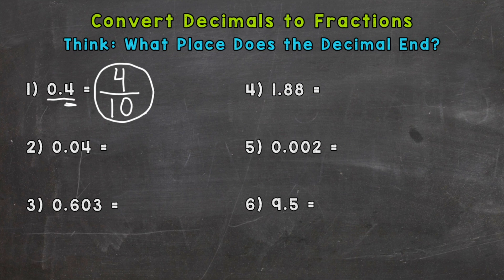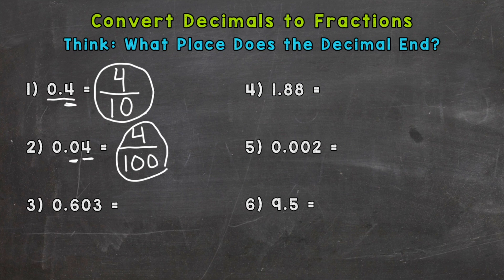Number two is similar to number one but not the same value — it's going to have a different denominator. Again, what place does that decimal end? It ends in the hundredths, because we have that placeholder zero that pushes the four to the hundredths. So our denominator is 100. Our numerator is still four, just like number one, because we only have a four to the right of the decimal. So four hundredths as a fraction.